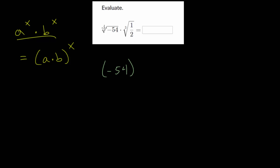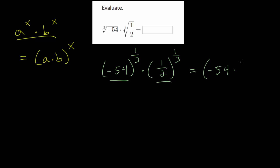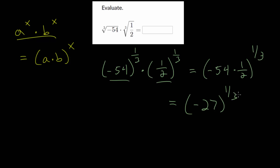We have negative 54, and since we're taking a third root, we write this to the 1/3 power. This is multiplied by 1/2 raised to that same 1/3 power. Since they have different bases but the same exponent, we can rewrite it as a product: negative 54 multiplied by 1/2, all raised to the 1/3 power. The benefit is that we can simplify: negative 54 times 1/2, or negative 54 cut in half, is just negative 27. So we have negative 27 raised to the 1/3 power — in other words, we're taking the cube root of negative 27.